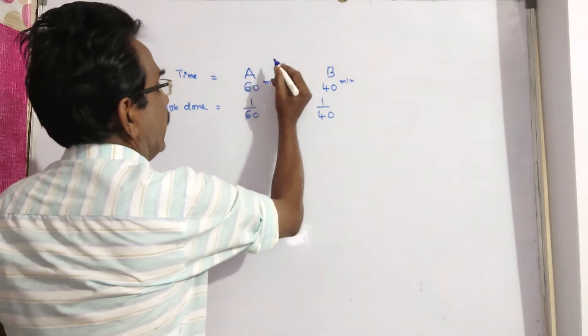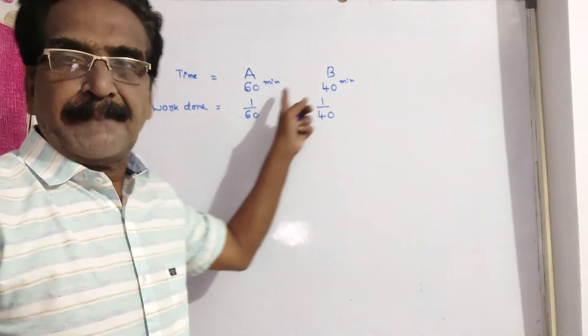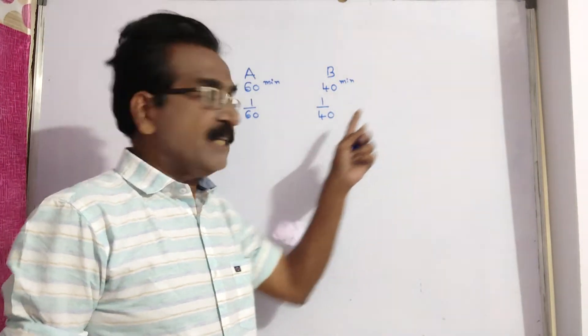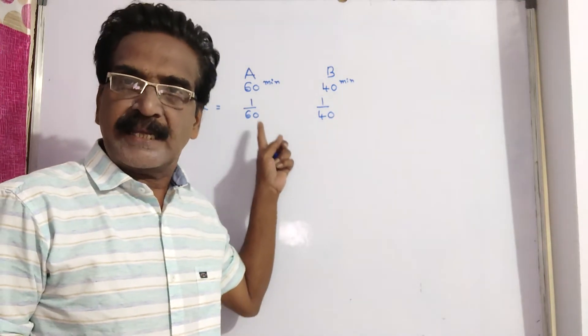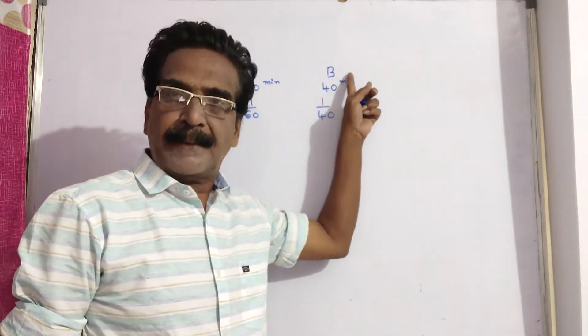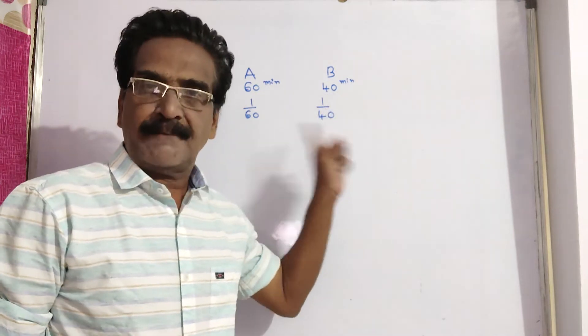Pipe A can fill in 60 minutes, pipe B in 40 minutes. So, the work done by pipe A is 1 by 60 per minute and the work done by pipe B is 1 by 40 per minute.